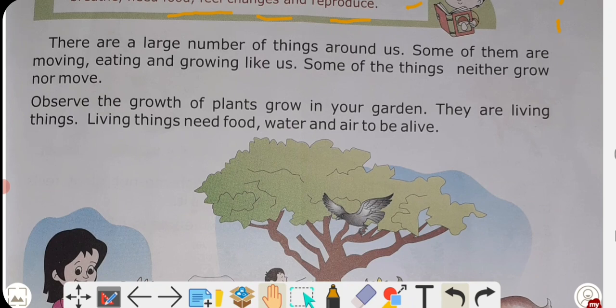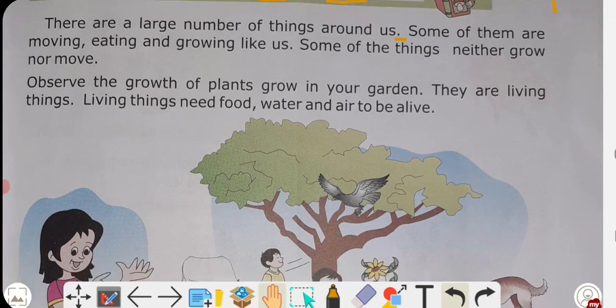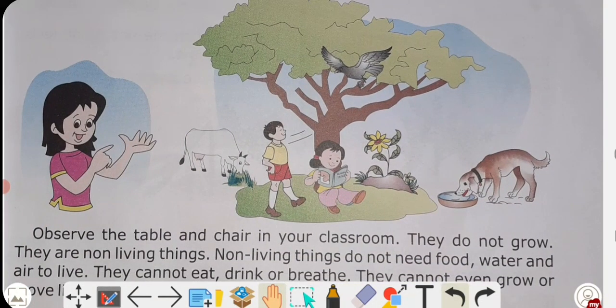There are a large number of things around us. If you go outside, you will see roads, vehicles, animals, trees, plants, birds, insects, mosquitoes — all of these are living things surrounding us.